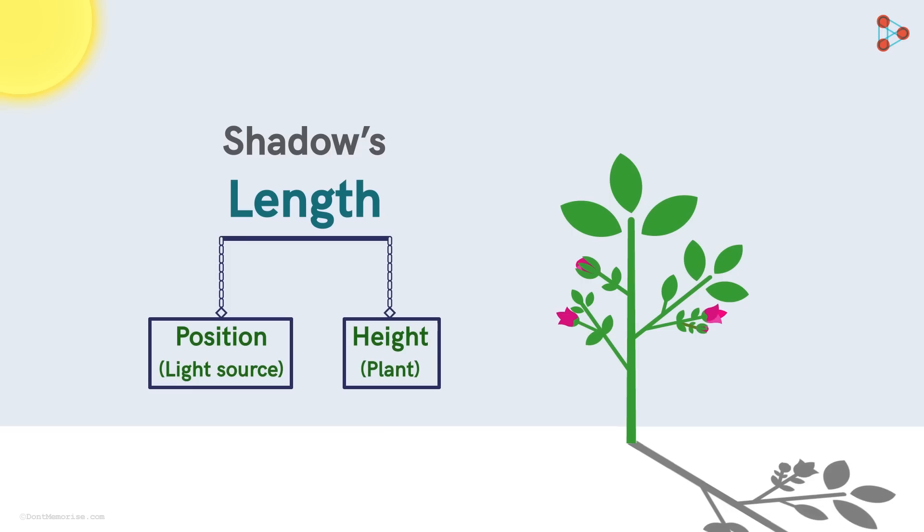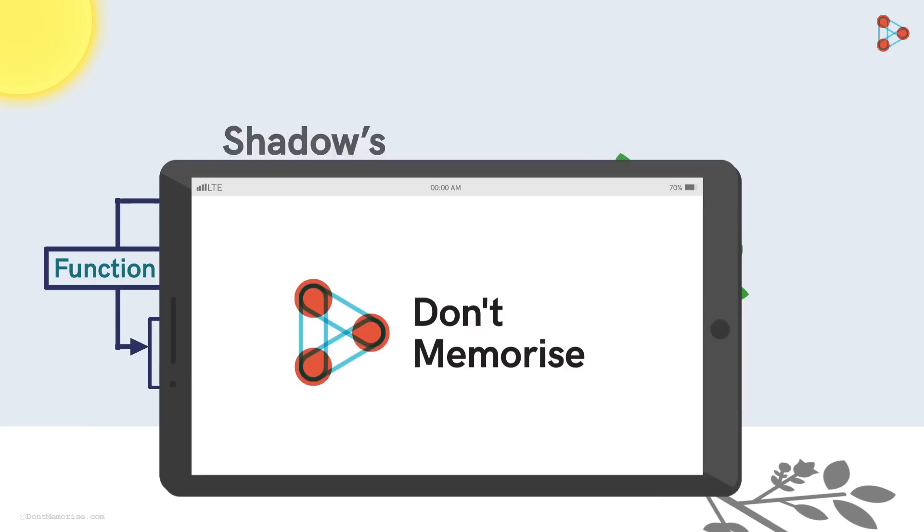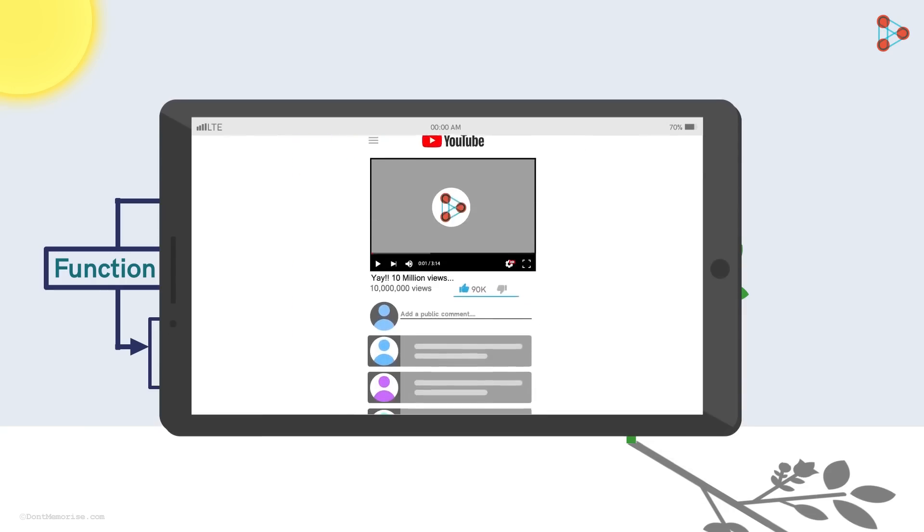So we can say that the length of the shadow is a function of the following two things. The output is dependent on these two things which could be considered as the inputs. That's a very simple way to understand functions. Could you think of more inputs this output is dependent on here? Tell us your answers in the comment section below.